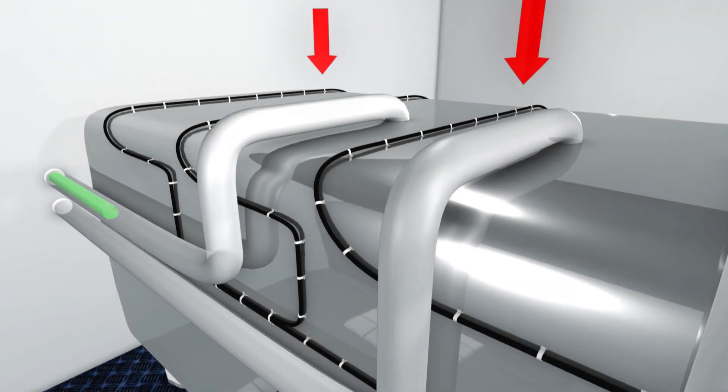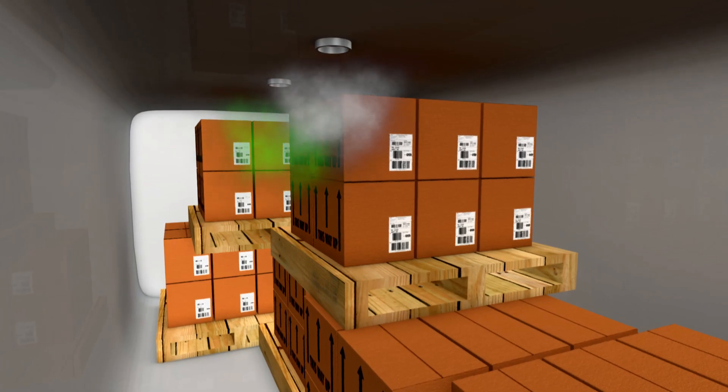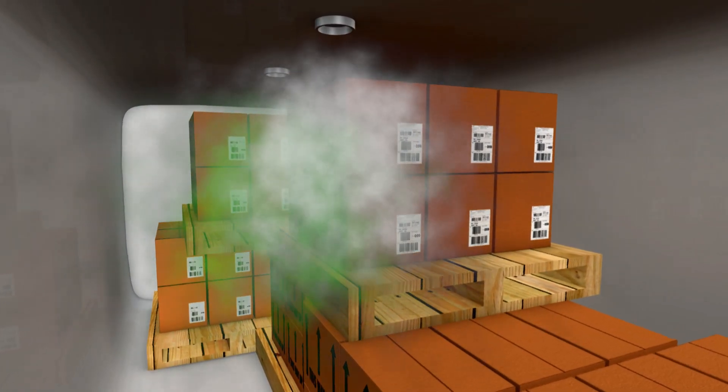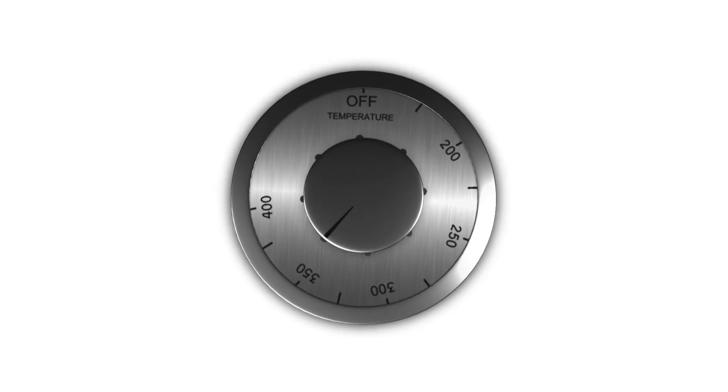Inert gases are injected to remove all traces of air. The product load then undergoes the conditioning phase during which the product is humidified and its temperature raised to desired levels.